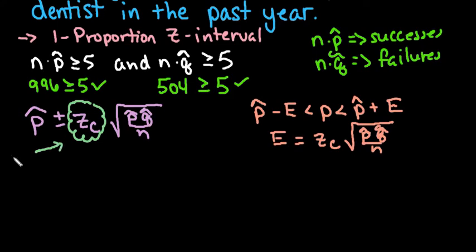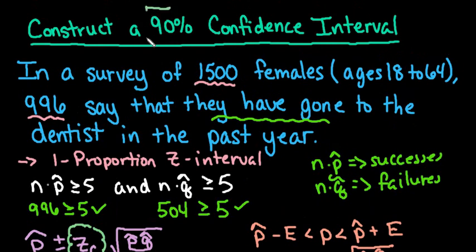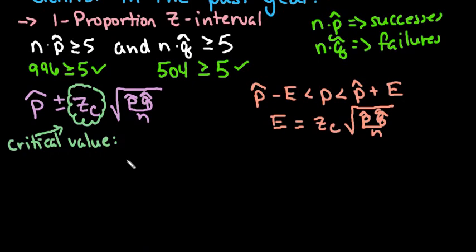This is known as the critical value. Basically the critical value for this is found by looking at our level of confidence. Our level of confidence is 90 percent. What that means is that we want 90 percent of our area to be in between. So our critical value can be found by doing inverse norm: one half of one minus the area or the level of confidence, comma zero, comma one. Let's go ahead and find this.